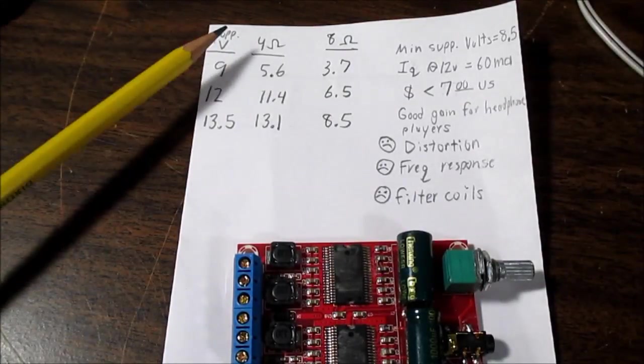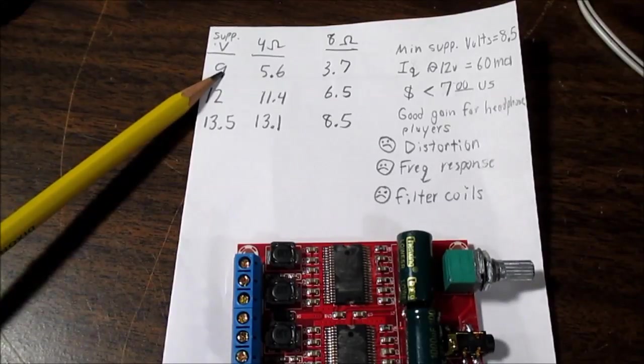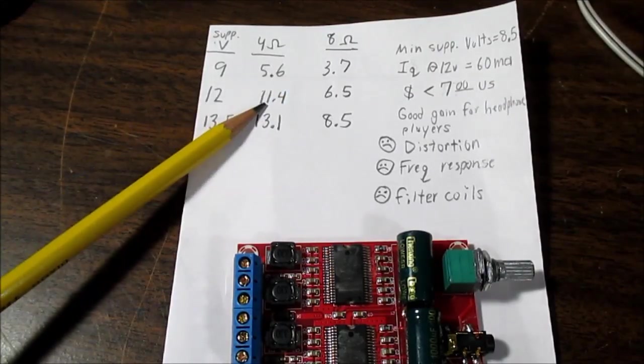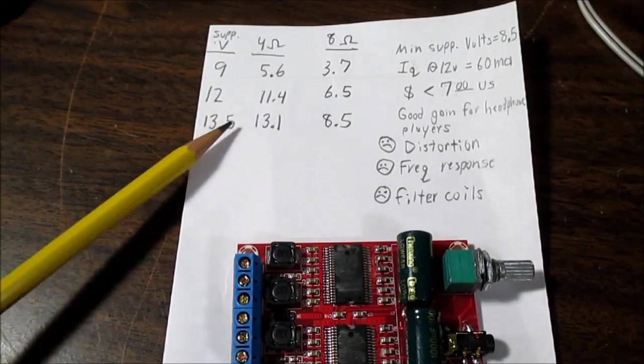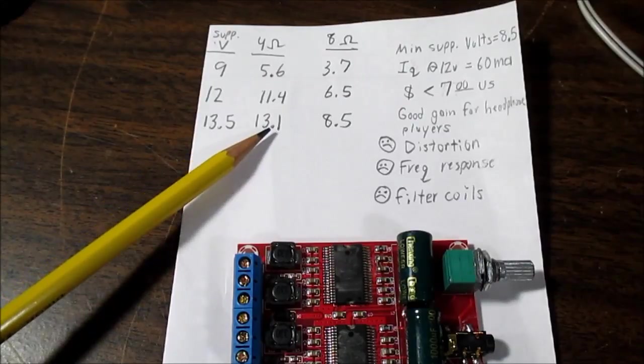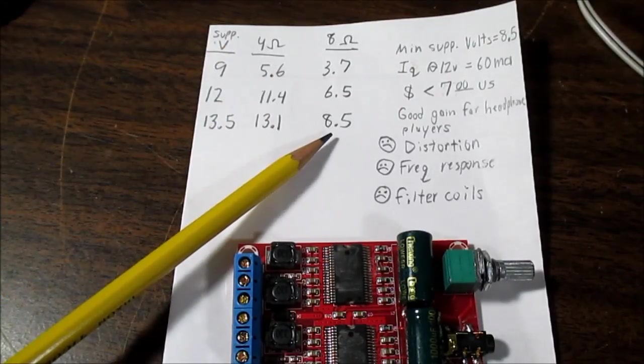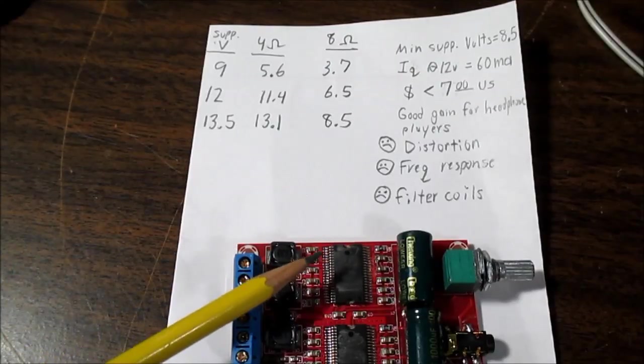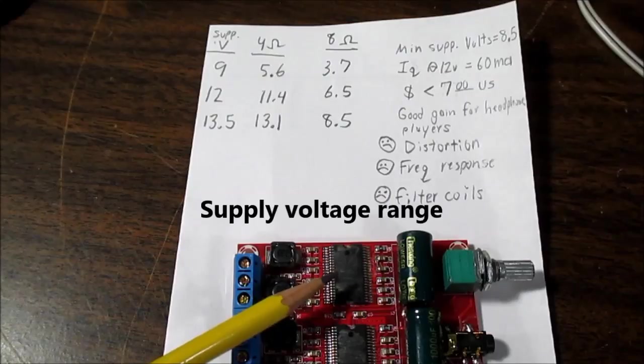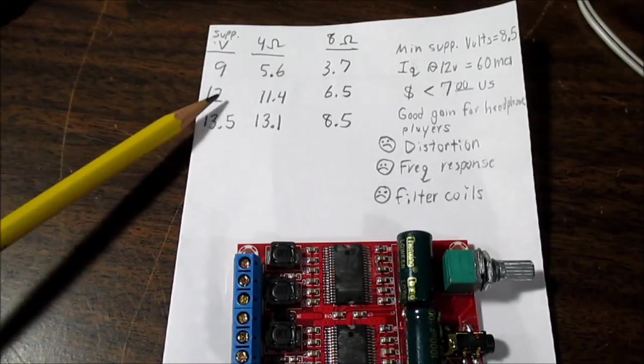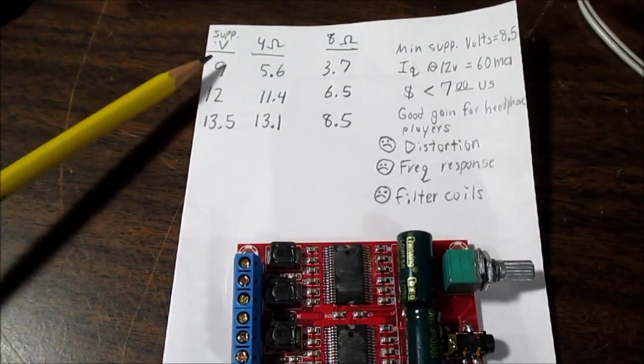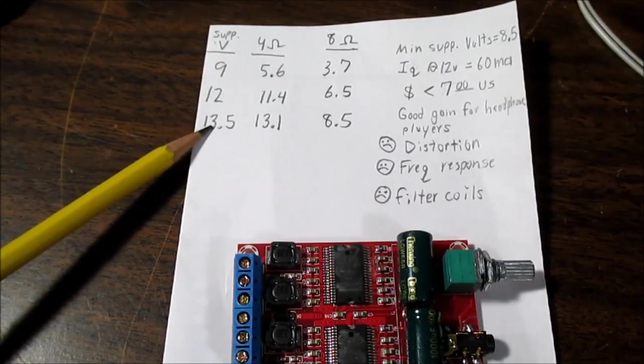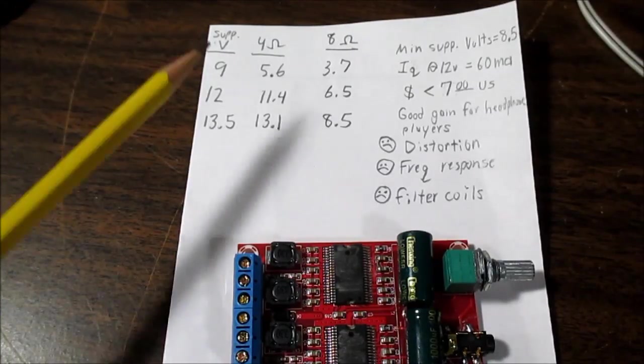And here are the results of the power tests. At a supply voltage of 9 volts, 4 ohms, we got 5.6 watts. At 8 ohms it was 3.7. Supply voltage 12, we got 11.4, 4 ohms. And 6.5 at 8 ohms. 13.5 volts, we got 13.1 watts at 4 ohms, and 8.5 at 8 ohms. Now I use these band of measurements. This has a fairly tight voltage range. The absolute maximum on the datasheet is 14. And they said the range of voltages you can use were these. So I mean you can go anywhere from 9 to 13.5. So I just took three measurement supply voltage points there. So that's the supply voltages.